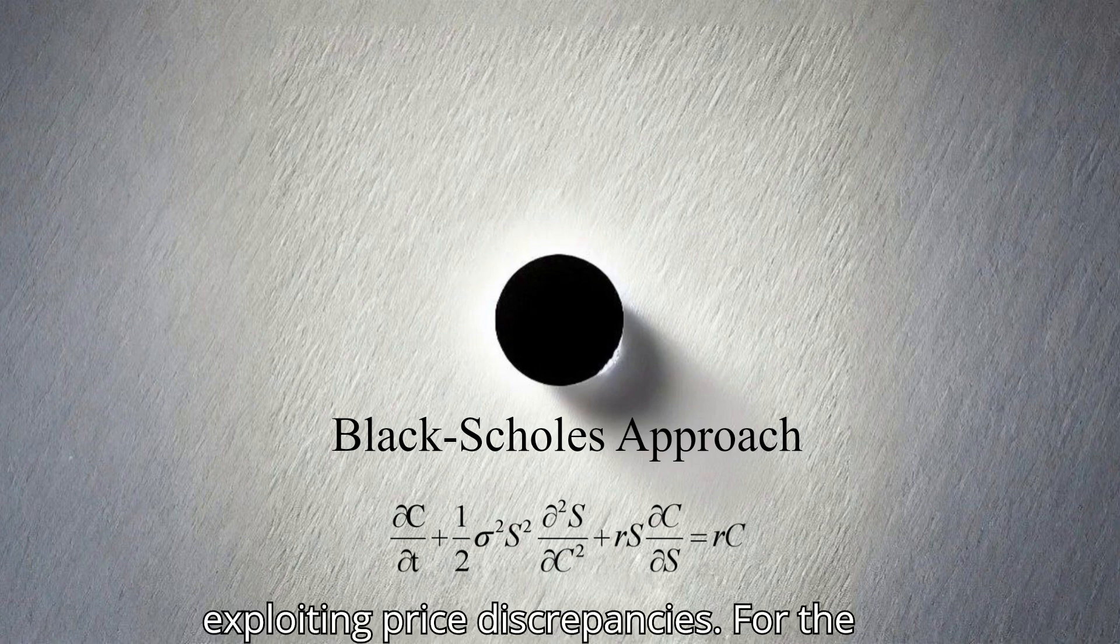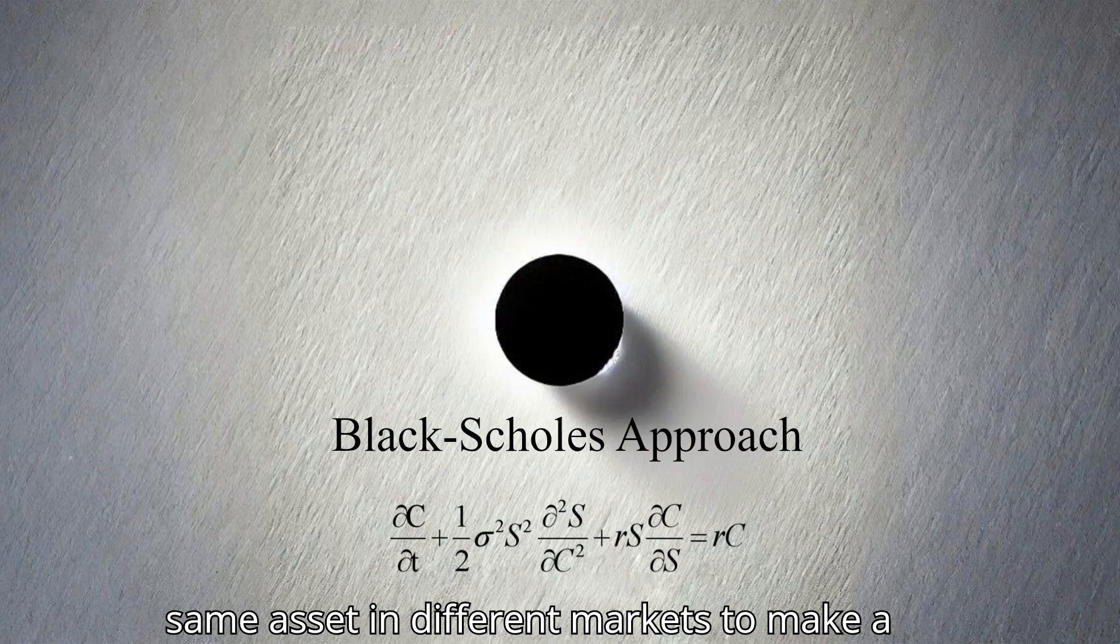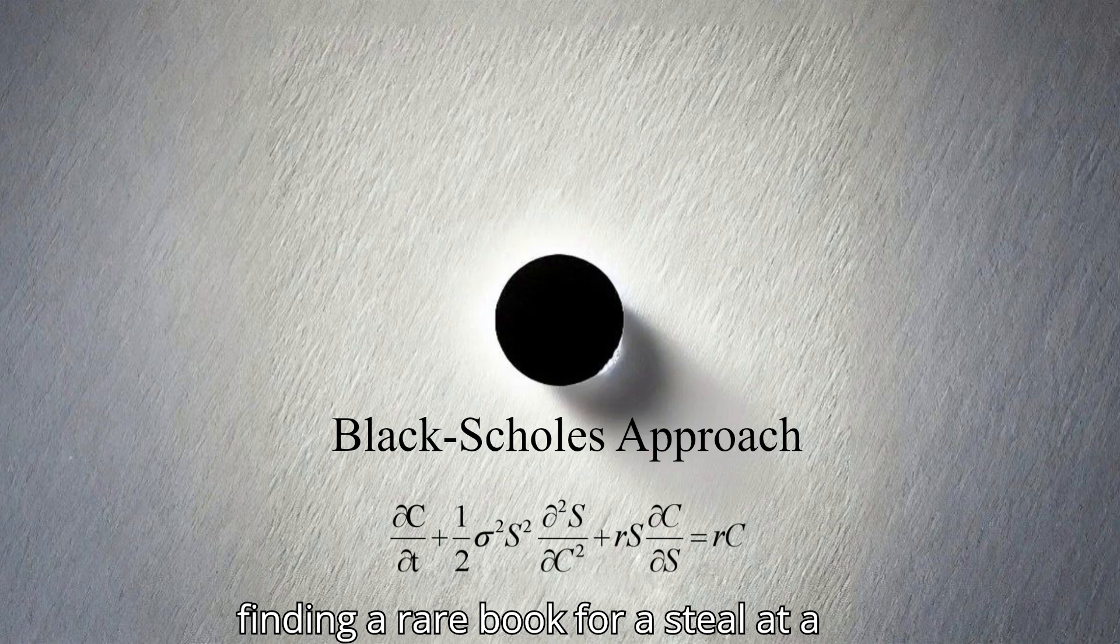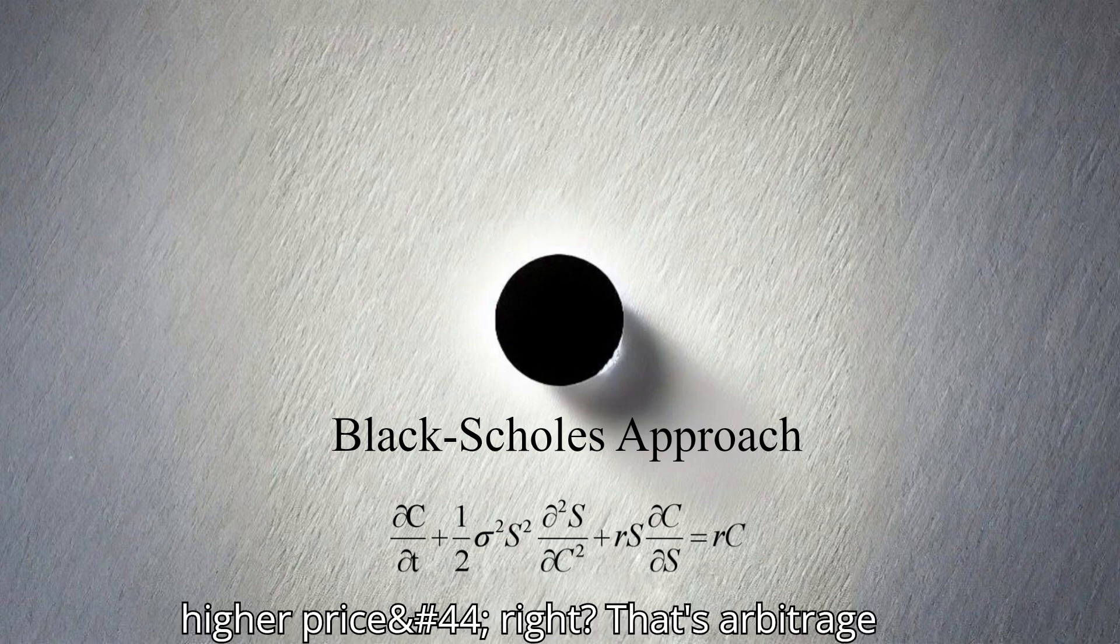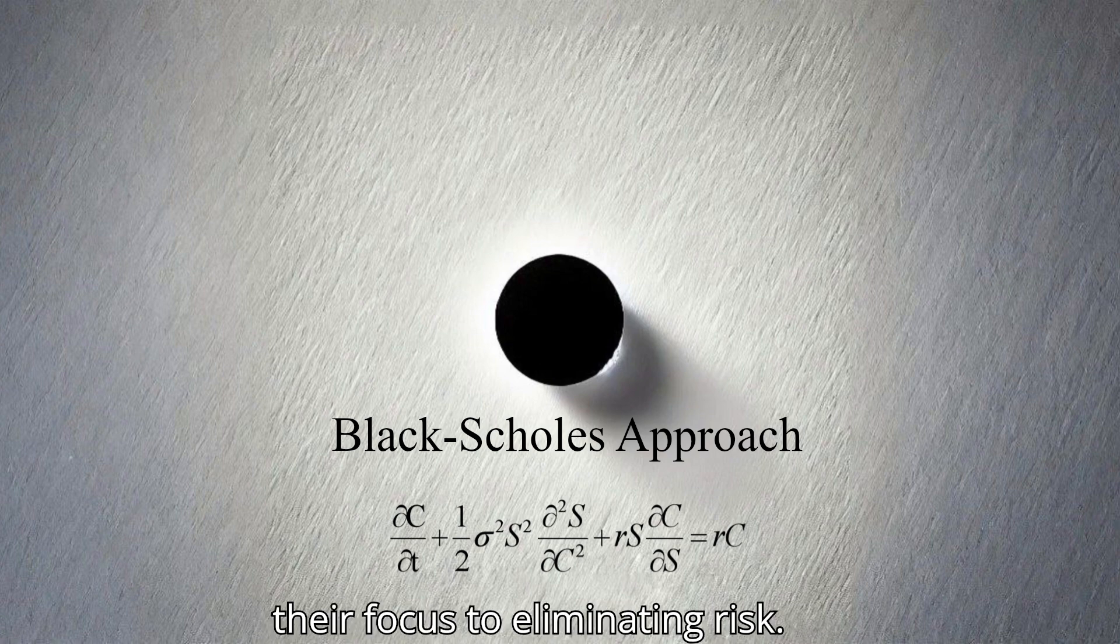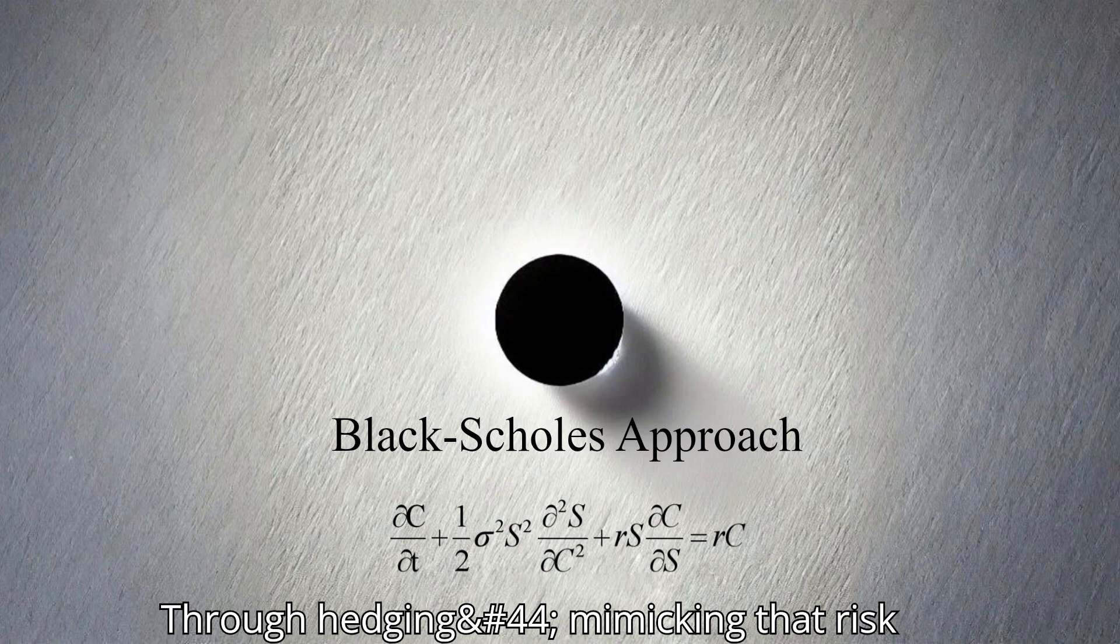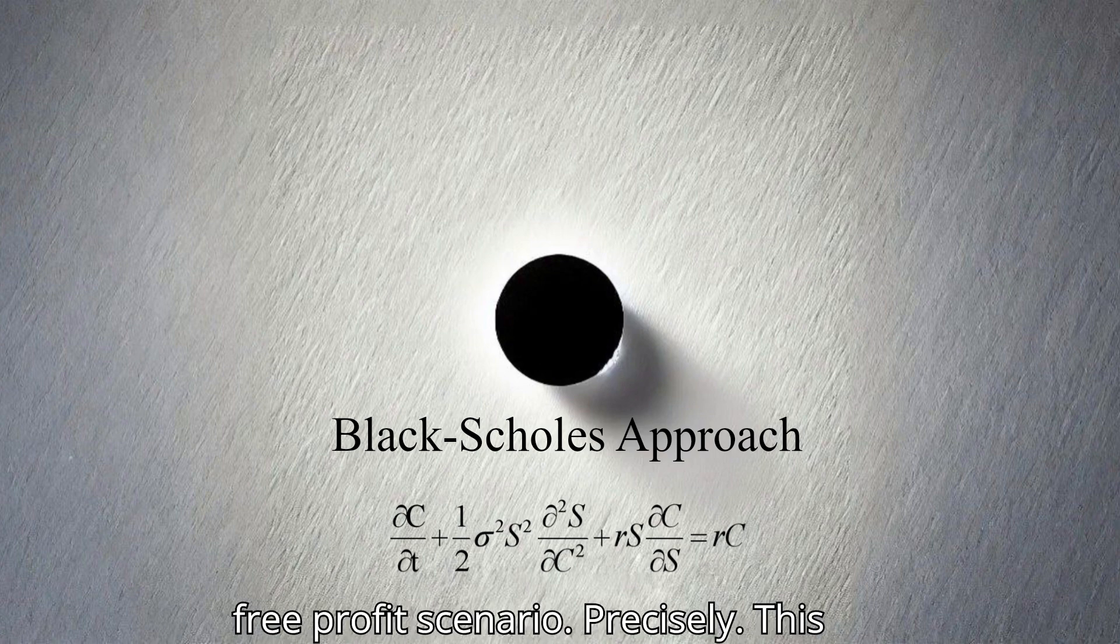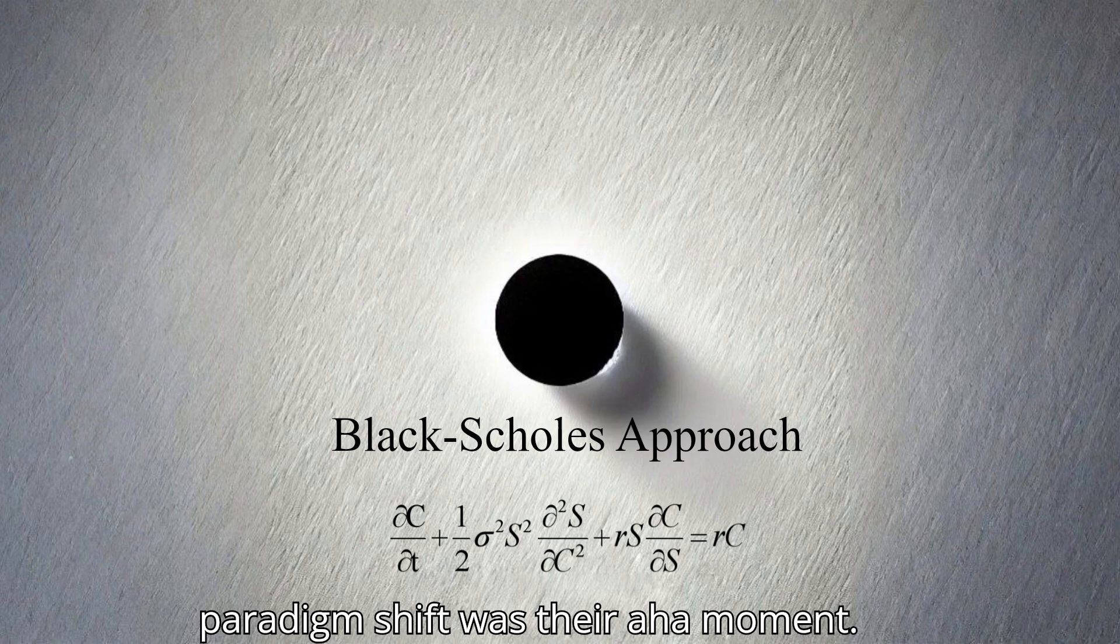This arbitrage concept sounds intriguing. Can you break it down for us? Essentially, arbitrage involves exploiting price discrepancies for the same asset in different markets to make a risk-free profit. Imagine finding a rare book for a steal at a local market and then selling it online for a significantly higher price. That's arbitrage in action. So instead of trying to predict individual investors' risk appetites, which is incredibly complex, they shifted their focus to eliminating risk through hedging, mimicking that risk-free profit scenario. This paradigm shift was their aha moment.